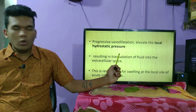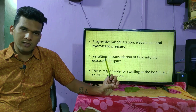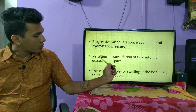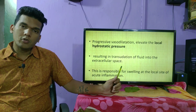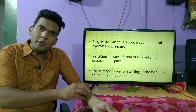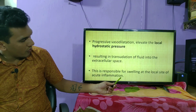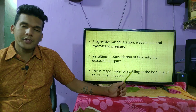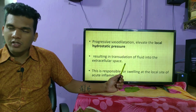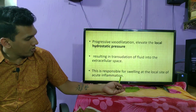Because of vasodilatation, the local hydrostatic pressure increases. Blood comes and stays there as it is not taken away by the veins, raising the pressure of the water in the blood. This results in transudation of fluid from the intravascular space into the extracellular space outside the cavity — responsible for swelling. So the three classic signs of inflammation — redness, warmth, and swelling — are all caused by progressive vasodilatation.